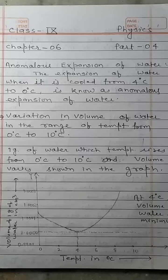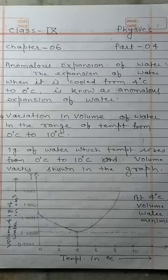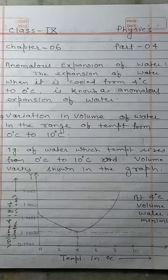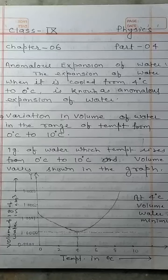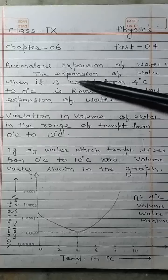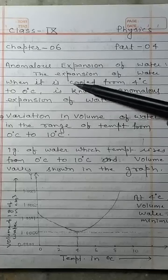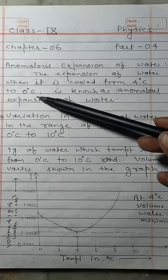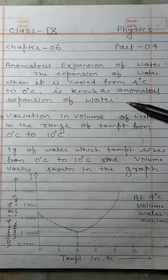In the previous video we read about anomalous expansion of water. The expansion of water when it is cooled from 4°C to 0°C is known as anomalous expansion of water. Anomalous expansion means unconventional expansion. Every substance on heating expands in volume, but here it is just the opposite — water expands when it is cooled.